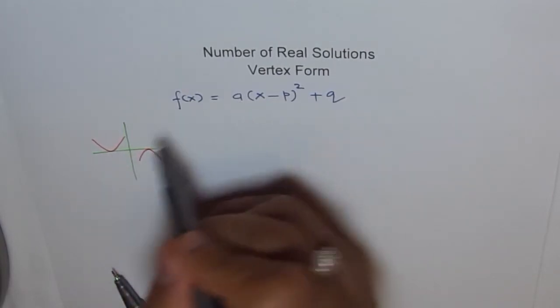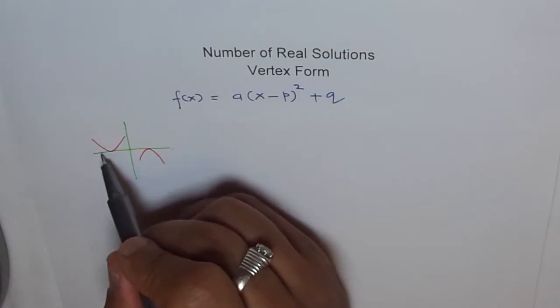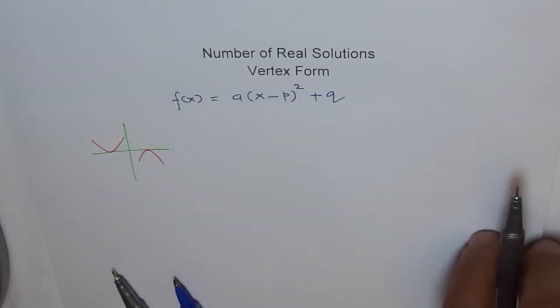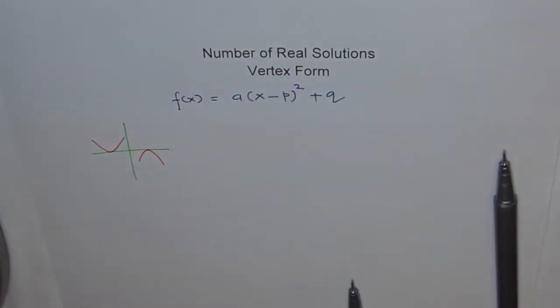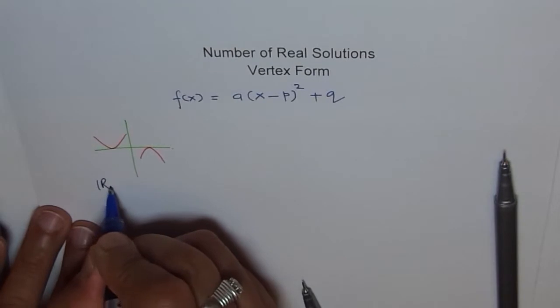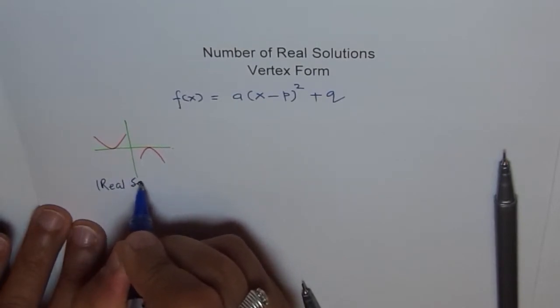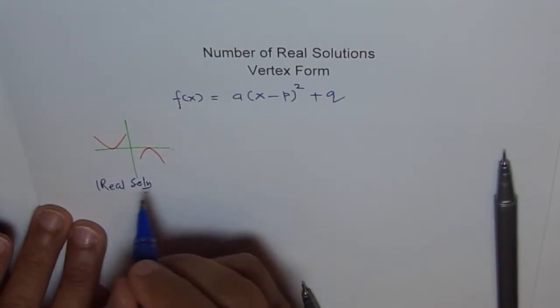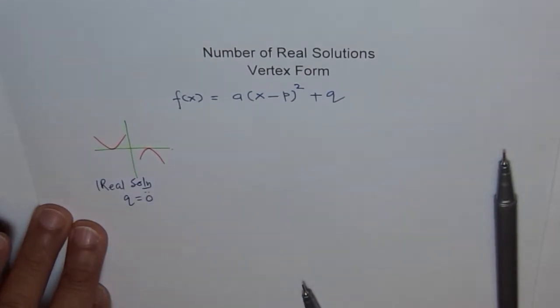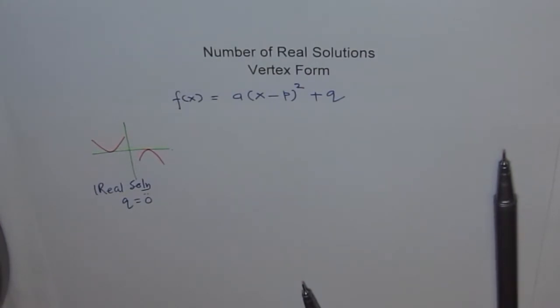Therefore, we can summarize that for one real solution, what is important? q equals to zero. That is a key issue. So for one real solution, q should be zero.